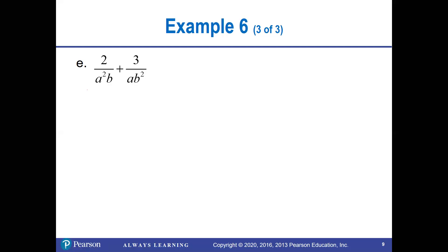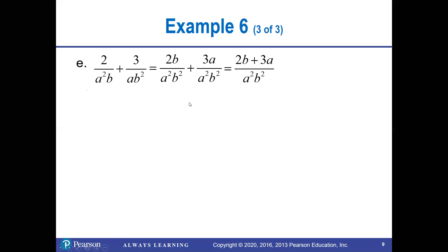For problem e, the common denominator: notice there are two a's in one denominator and one a in the other, and two b's in one and one b in the other. So both need two a's and two b's. Multiply the first by b on top and bottom, and the second by a on top and bottom. There's nothing in common to factor out, so that answer is fully reduced.